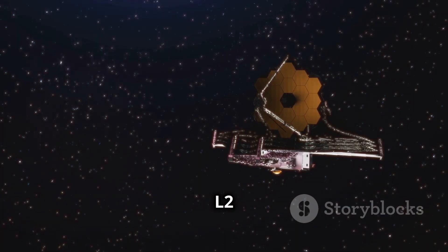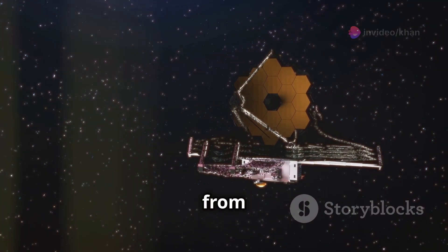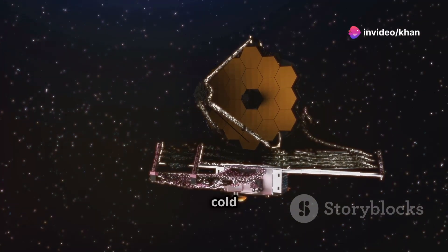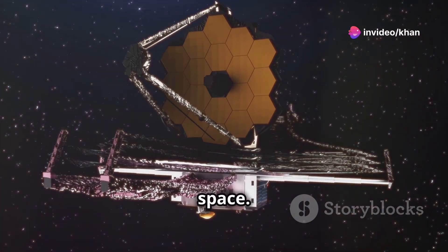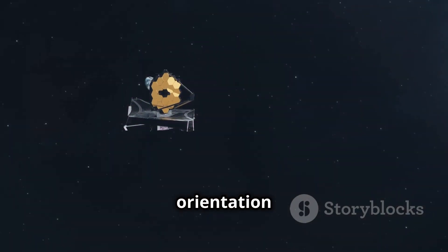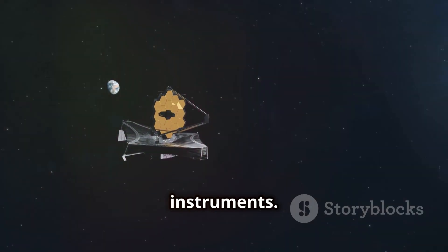Positioned at the L2 Lagrange point, 1.5 million kilometers from Earth, Webb enjoys a stable, cold vantage point in space. This unique location allows it to maintain a constant orientation and temperature, which is crucial for its sensitive instruments.